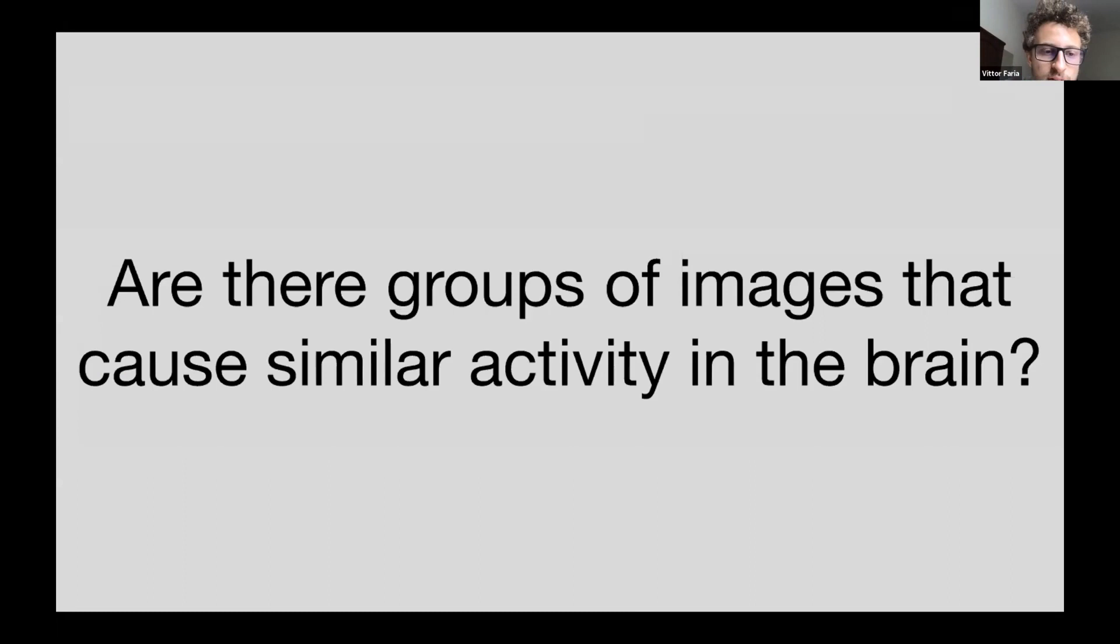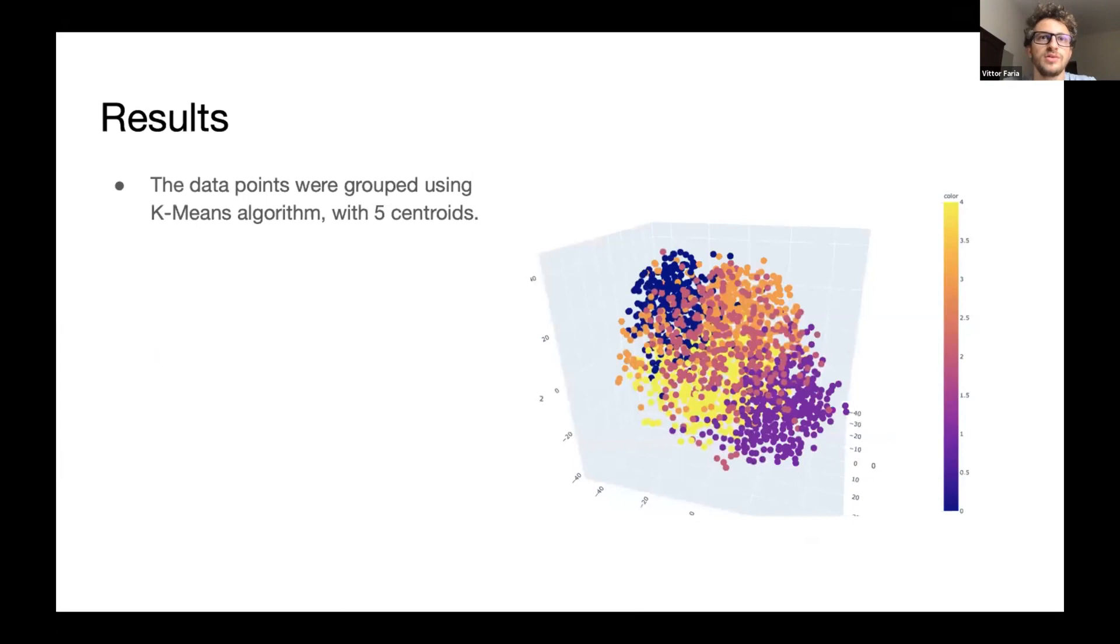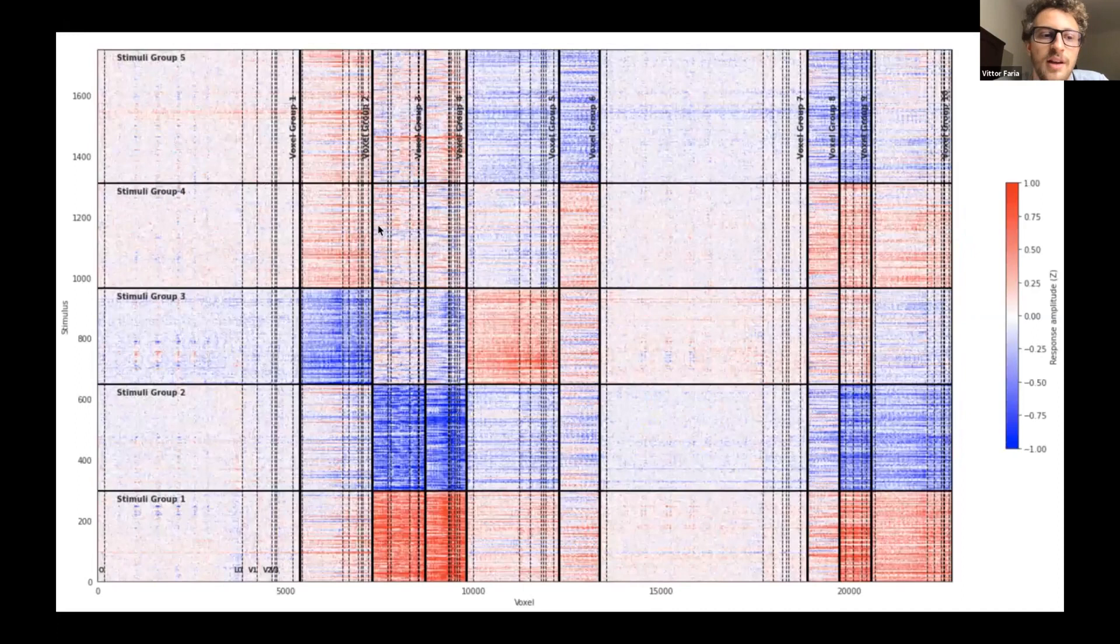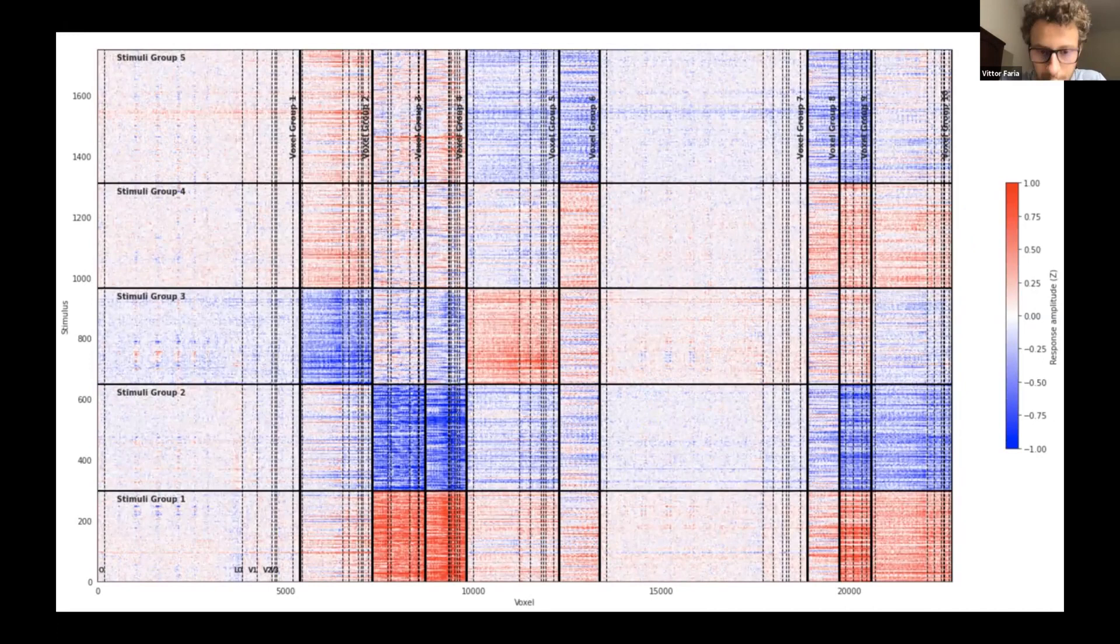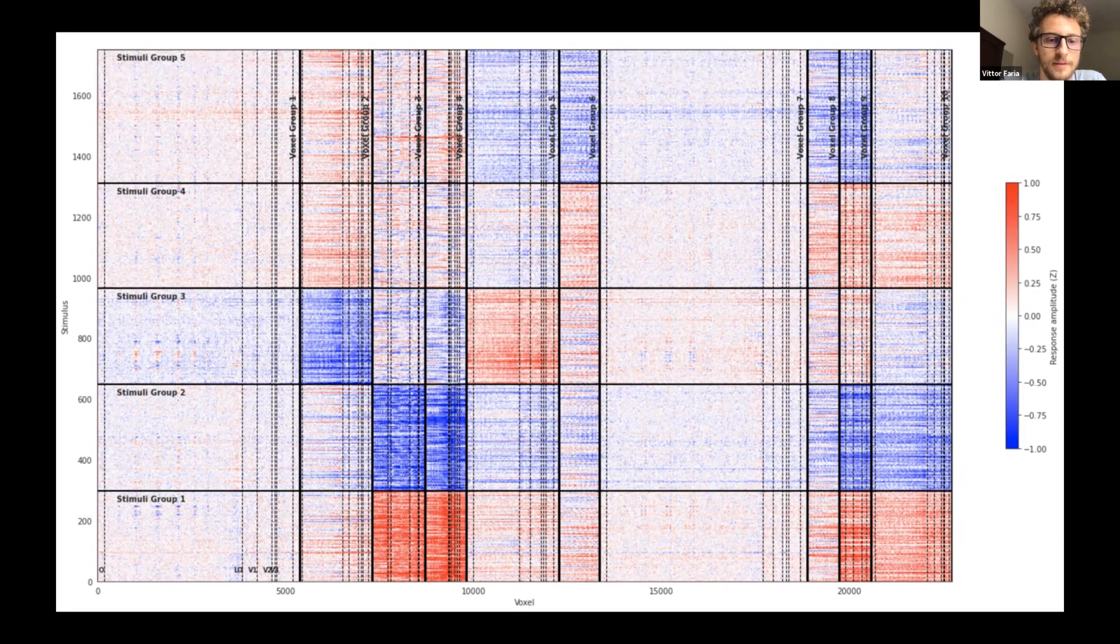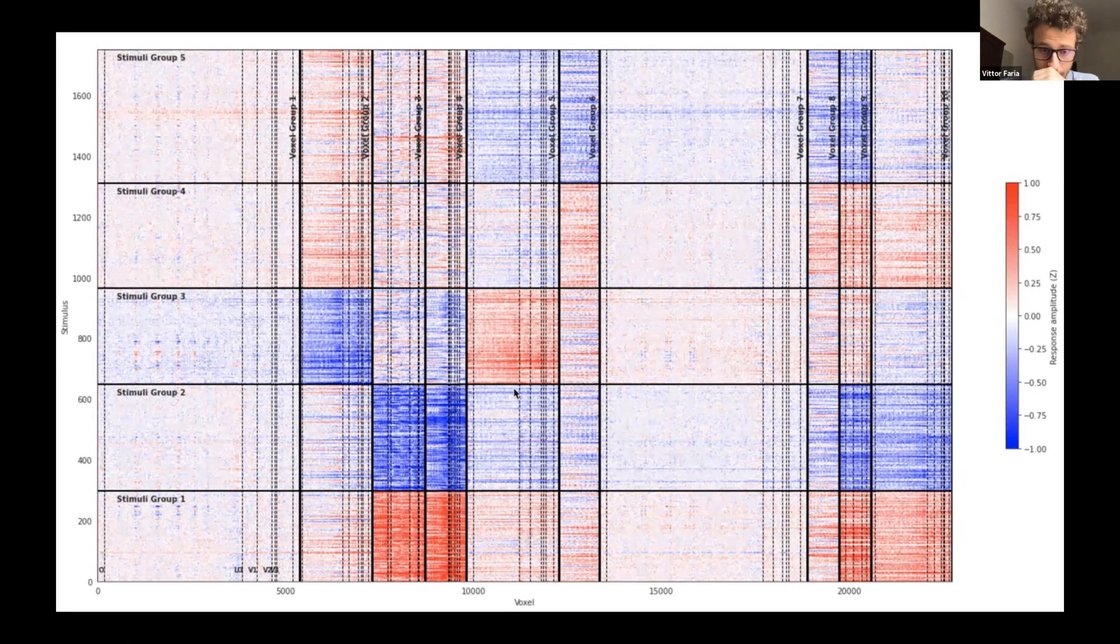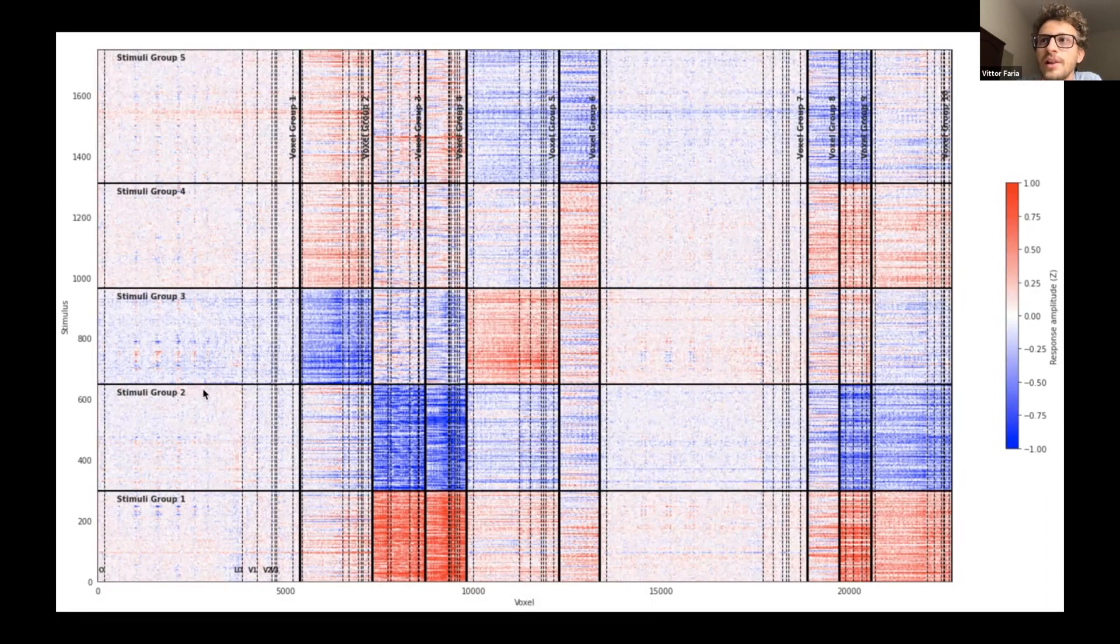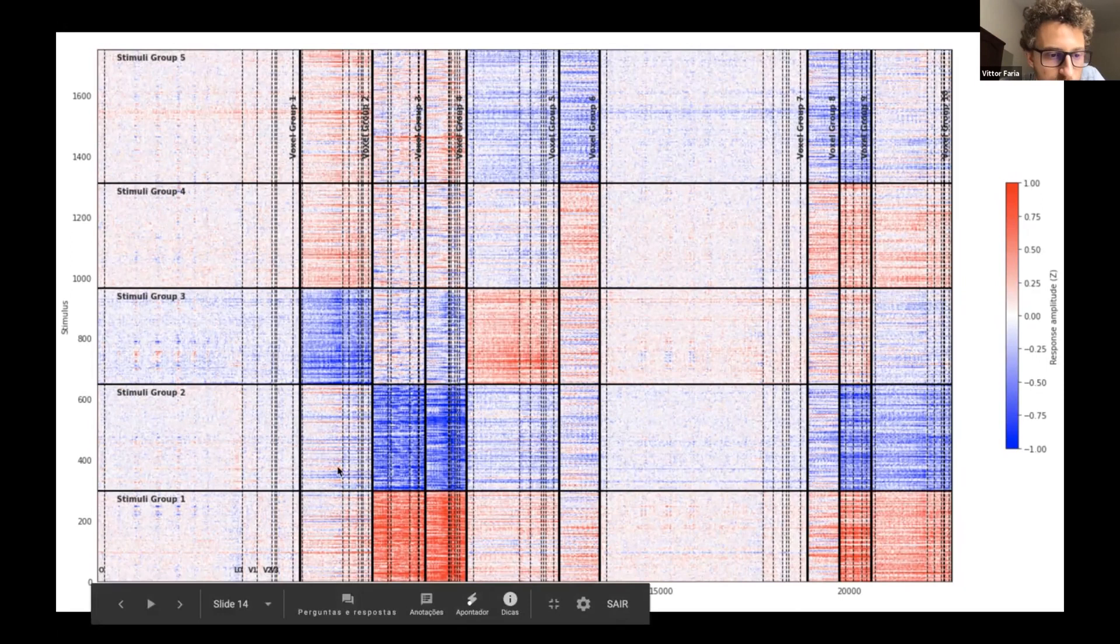And then we try to answer these other questions. Are there groups of images that cause similar activity in the brain? And we use the same approach from the previous question to answer this one. And here we see the clustering from the images in the dataset. We used five centroids this time. And here we see a picture that organizes the data.